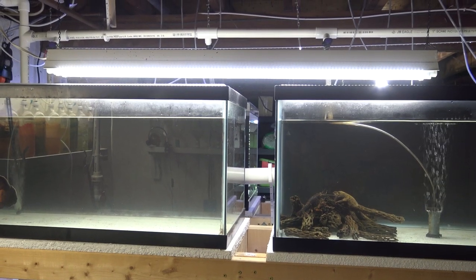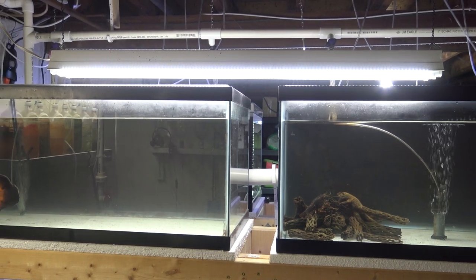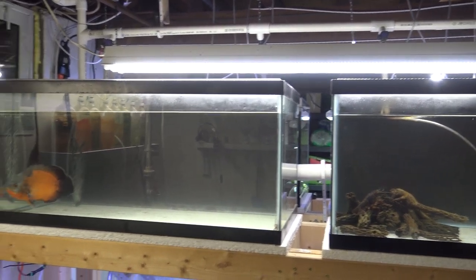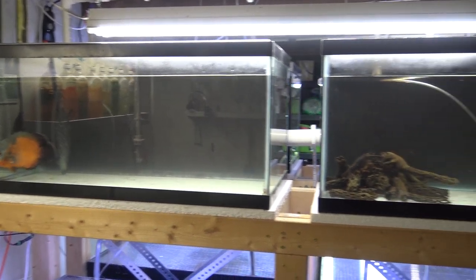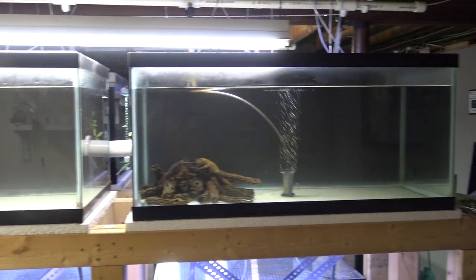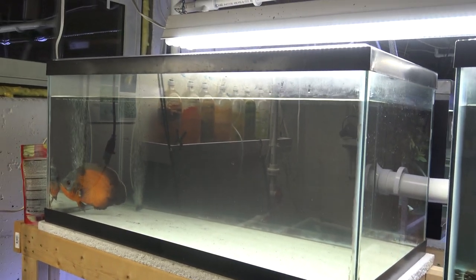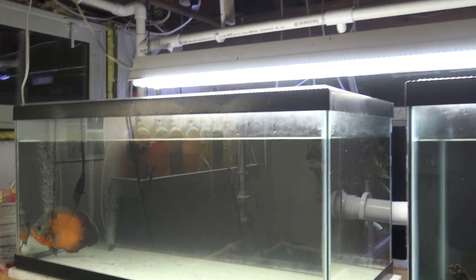All right, guys, and here is the finished product installed in the fish room above two of my 40 gallon breeder aquariums. Now, these two aquariums actually didn't have a light for the longest time. So I'm happy that they have a light now.